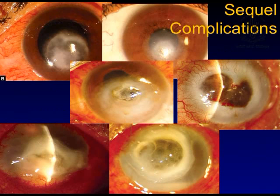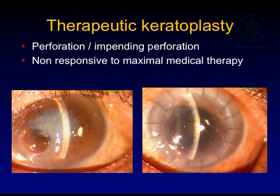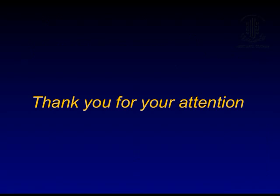Sequelae and complications of bacterial keratitis include perforations and anterior staphyloma, which need to be prevented. Surgical management may need to be resorted to when there is impending perforation or when maximal medical therapy does not work in microbial keratitis. This topic will be covered further by the next speaker.